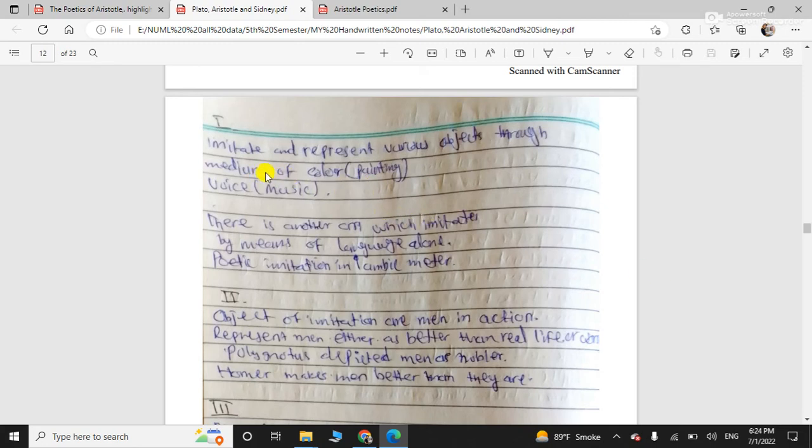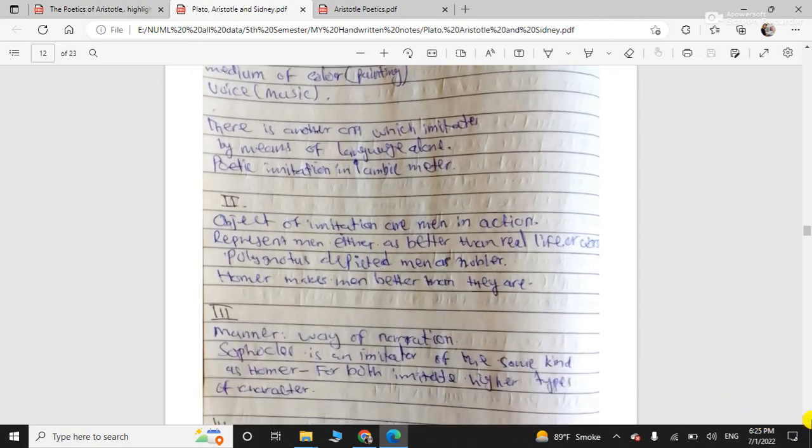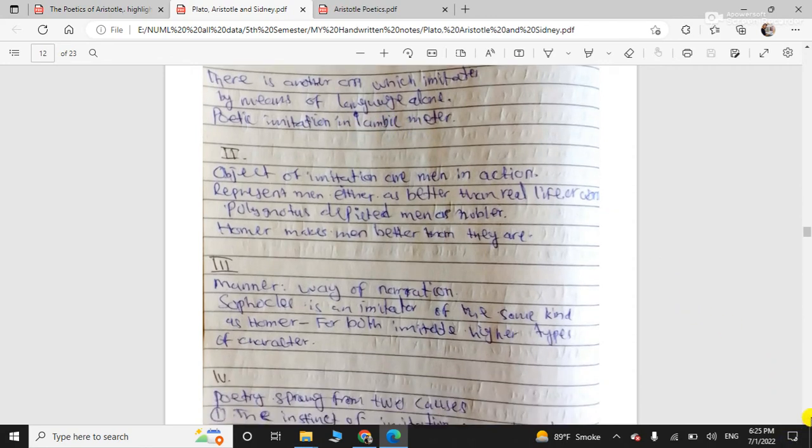Further he discusses that poetry, what does it do? Imitate and represent various objects through medium of color, painting, voice, music, etc. So, there is another art which imitates by means of language alone. So, use of diction. How language is used. And then he says it should be in iambic meter. Five iambic meter should be written.